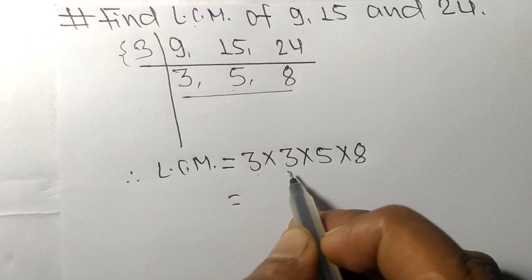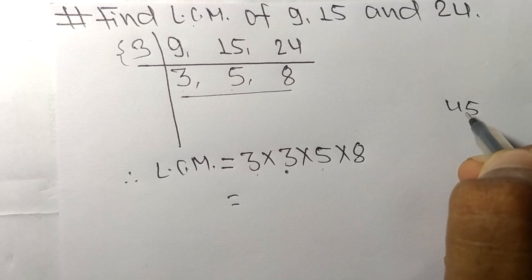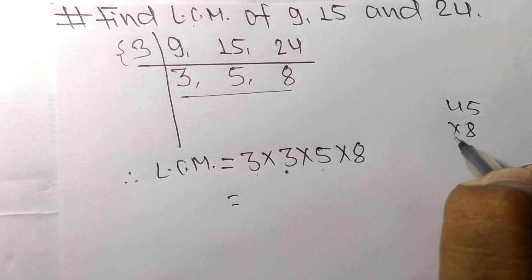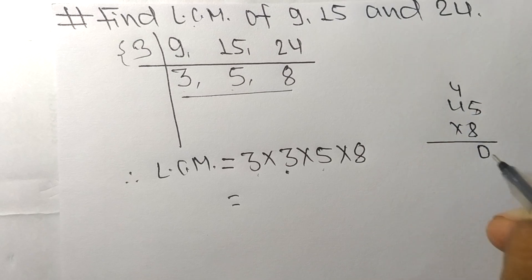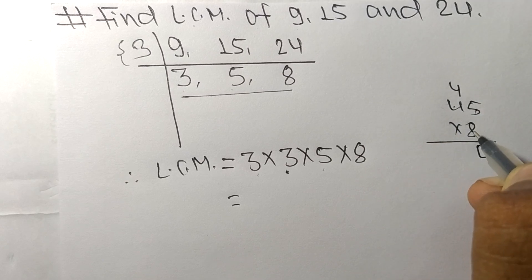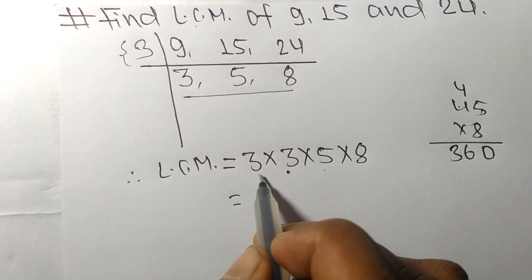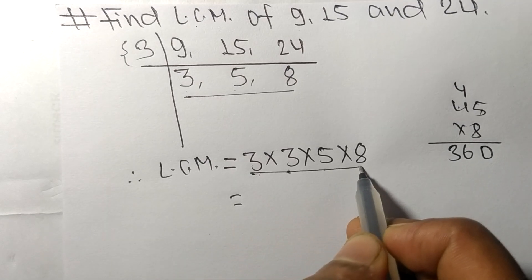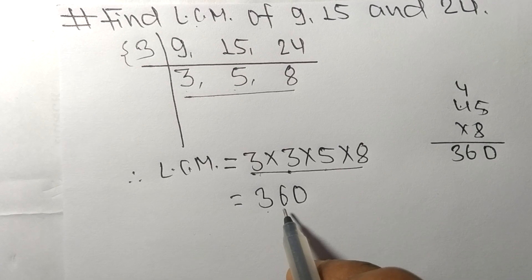So 3 times 3 means 9, 9 times 5 means 45. Now 45 times 8: 5 times 8 means 40, carry 4. 4 times 8 means 32 plus 4 equals 36. So by multiplying all these numbers, we got 360.